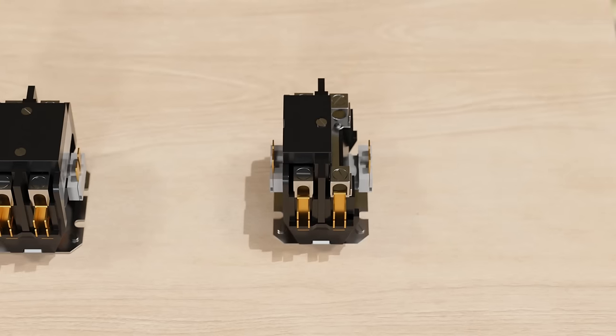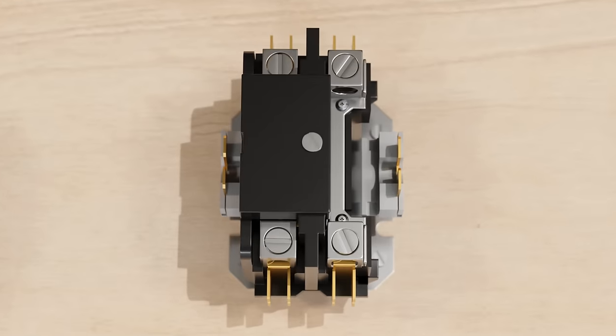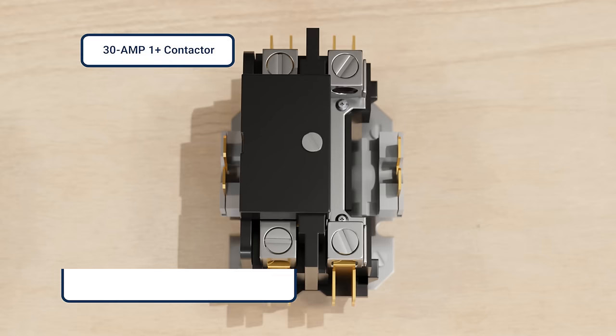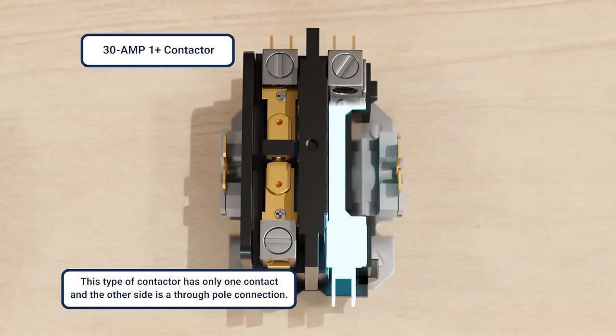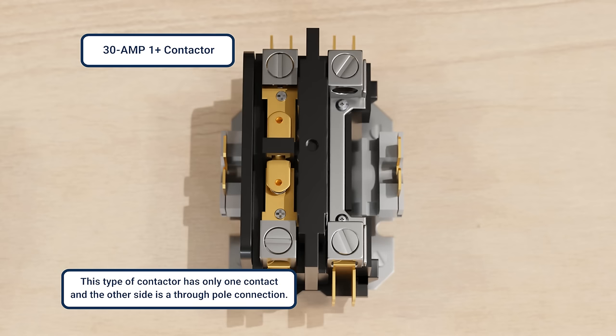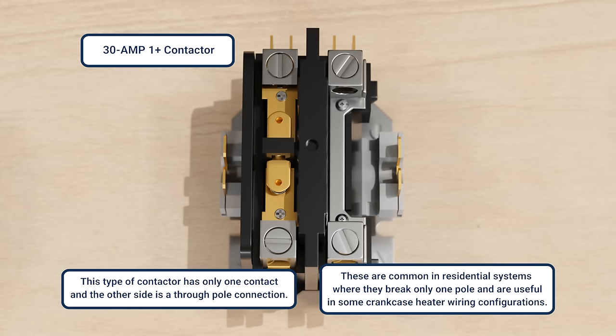Another common contactor you see in residential HVAC is the 25 or 30-amp 1-plus contactor. This type of 1-plus contactor has only one contact, and the other side is a through-pole connection. These are common in residential systems where they only need to break one pole of power. They can also be useful in some crankcase heater wiring configurations.